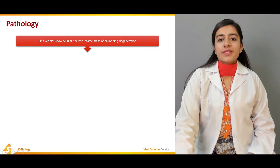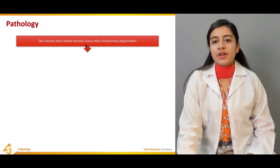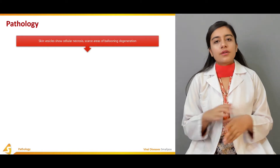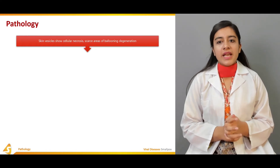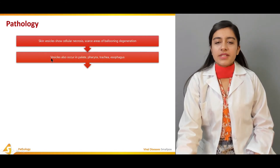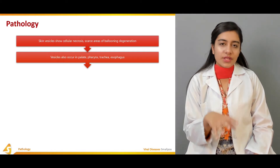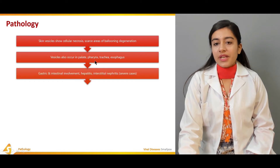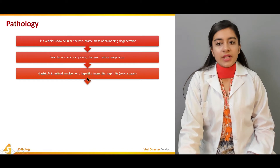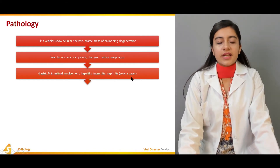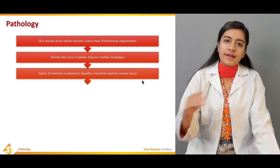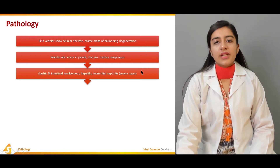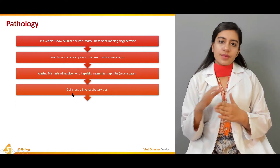In the pathology of smallpox, skin vesicles show cellular necrosis and areas of ballooning degeneration. Vesicles are not only present on the skin but can also occur inside the body — on the palate, pharynx, trachea, esophagus, and in severe disease in the intestine and liver. These severe complications occur when the disease is not controlled, treated, or diagnosed in time.